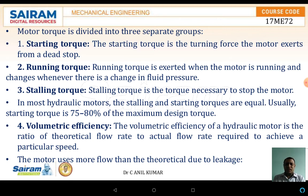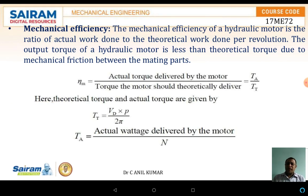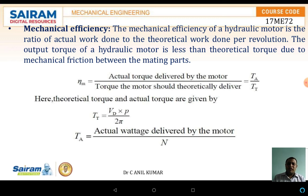The volumetric efficiency of the hydraulic motor is the ratio of the theoretical flow rate to the actual flow rate required to achieve a particular speed. The mechanical efficiency of the hydraulic motor is the ratio of the actual torque delivered by the motor to the theoretical torque delivery. Normally, the output torque of the hydraulic motor is less than the theoretical torque due to mechanical friction between the mating parts.